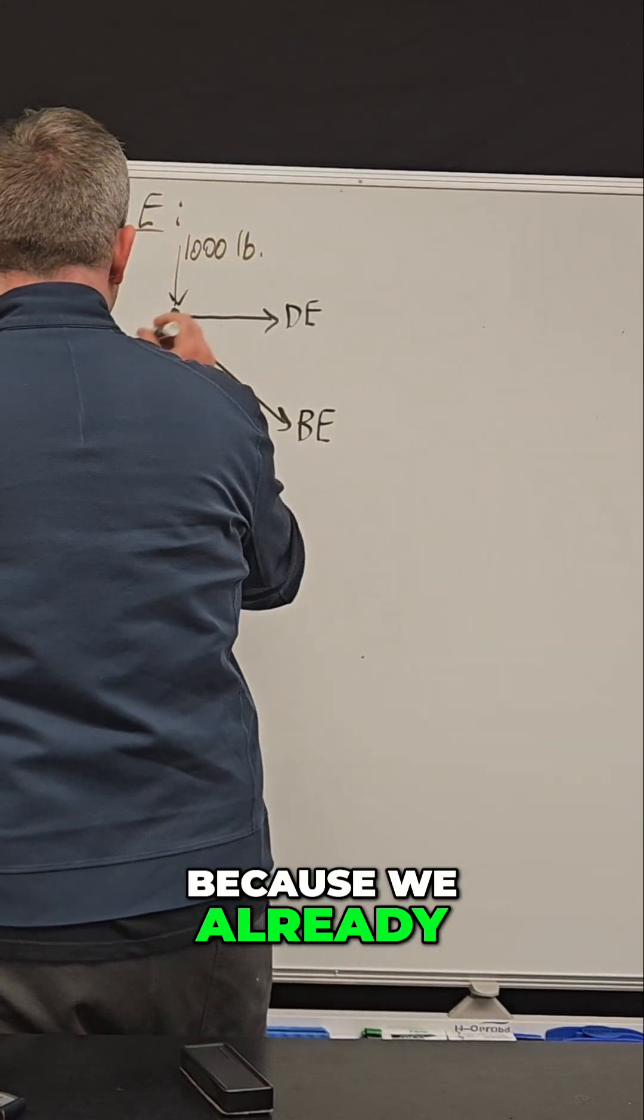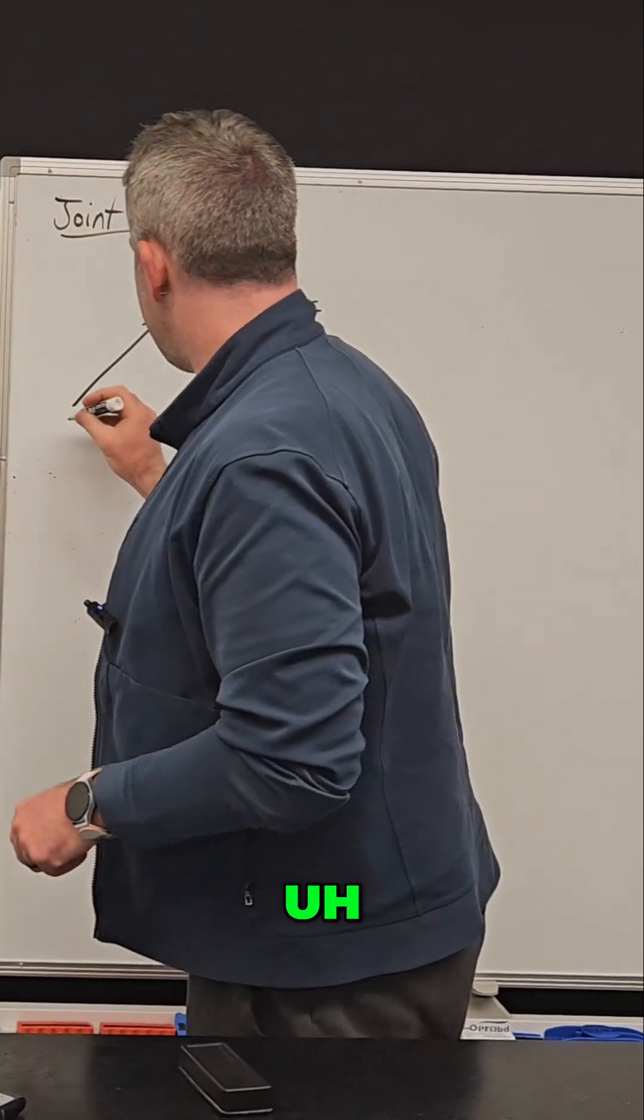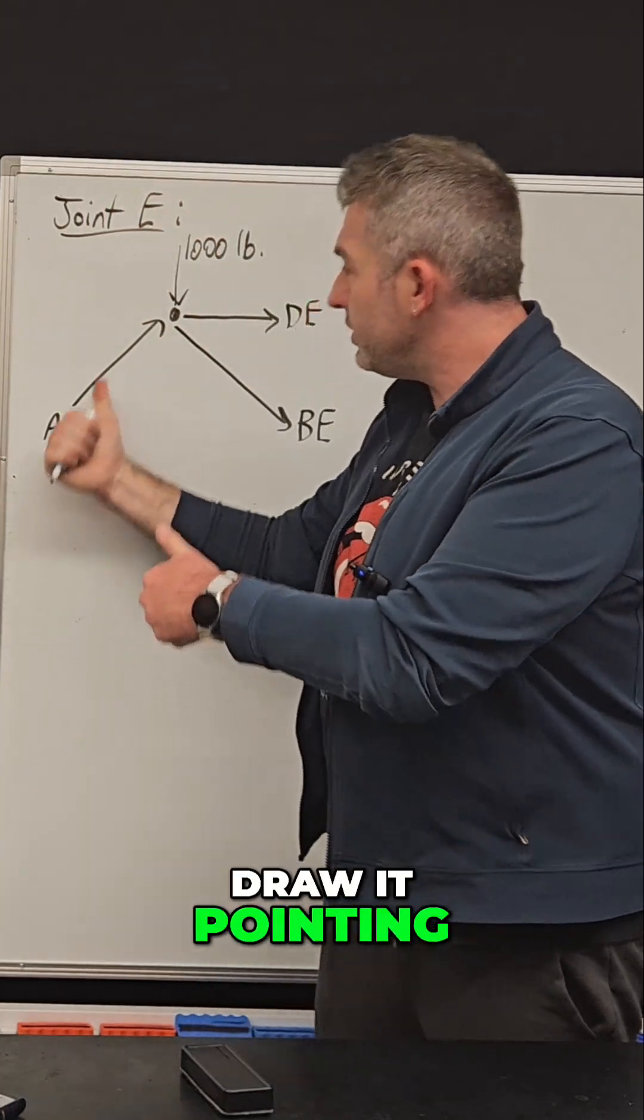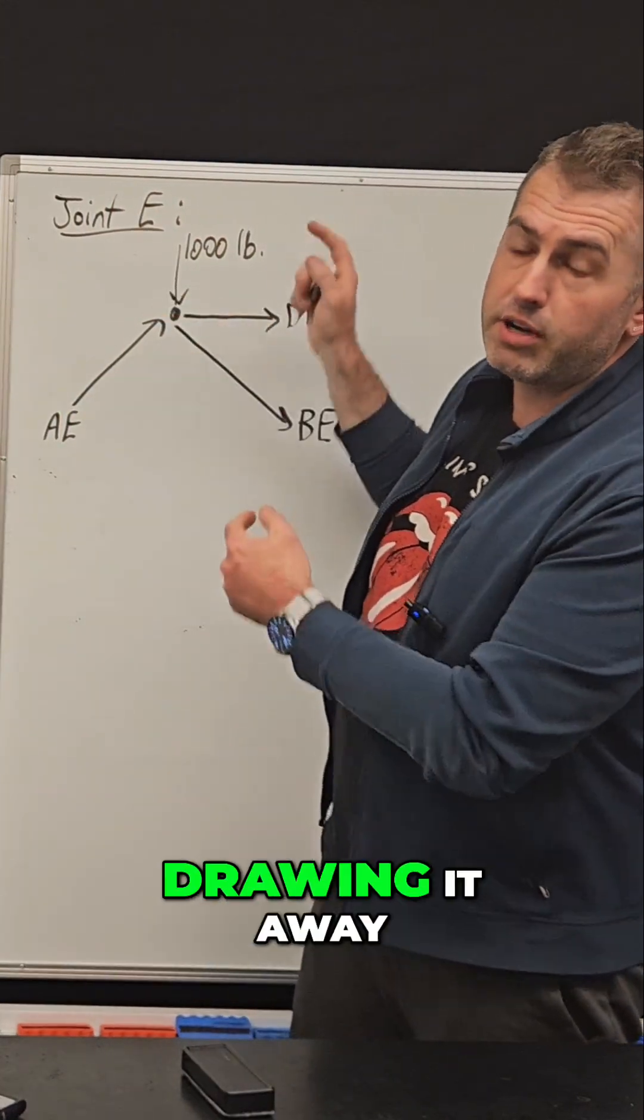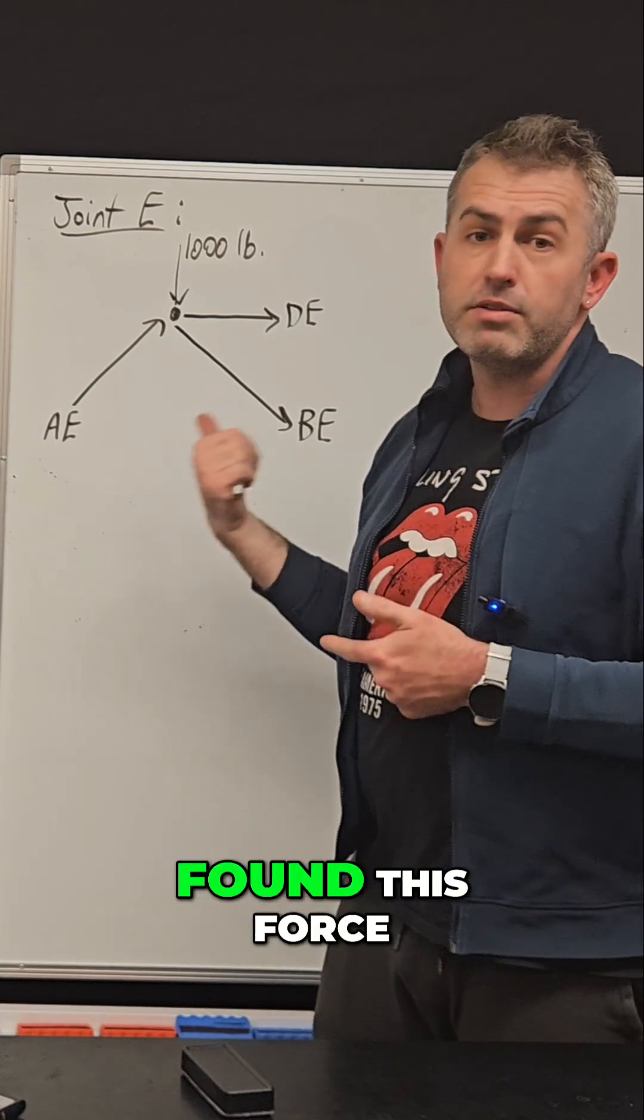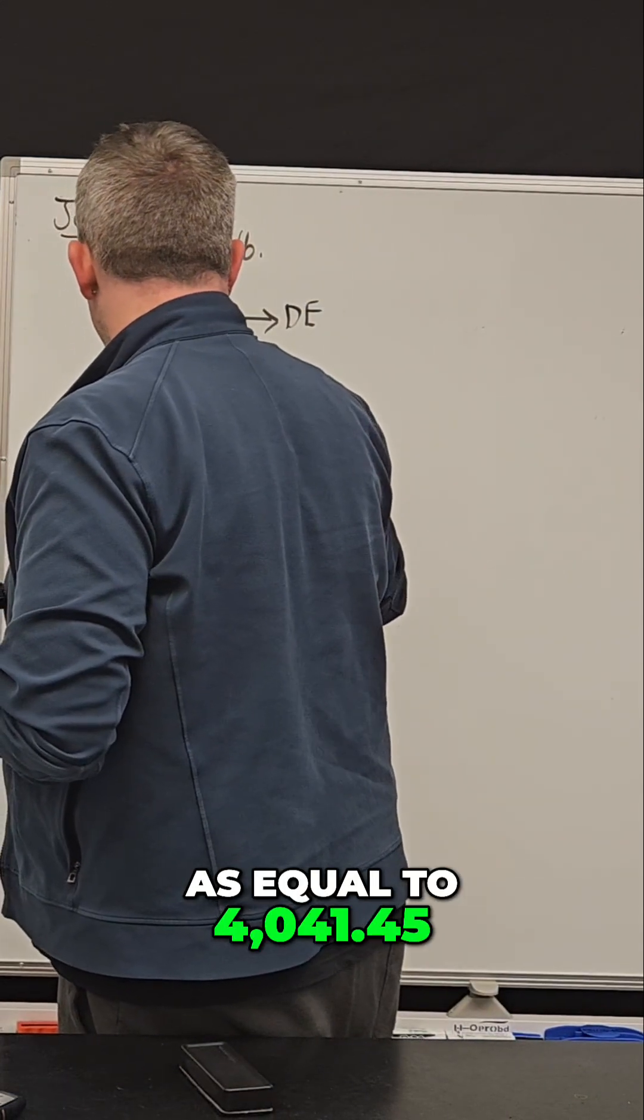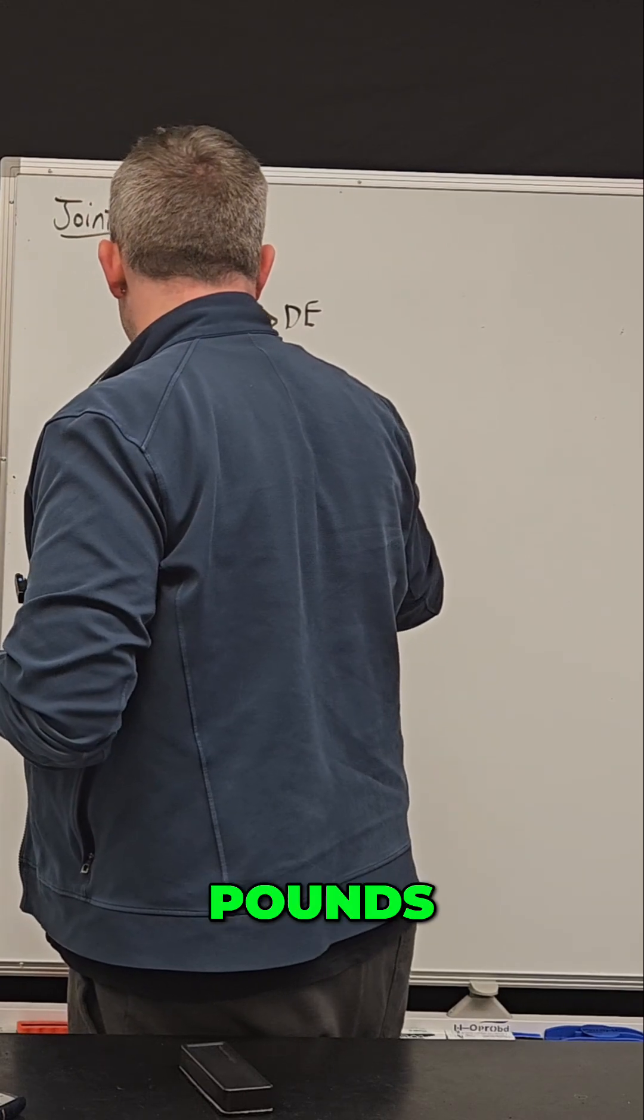Because we already know that member AE is in compression, we're going to draw it pointing towards the joint rather than assuming it's in tension and drawing it away, because we already found this force. And so I can write that as equal to 4041.45 pounds.